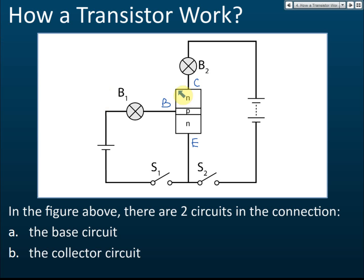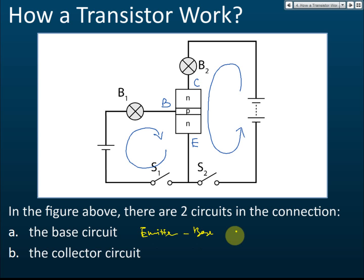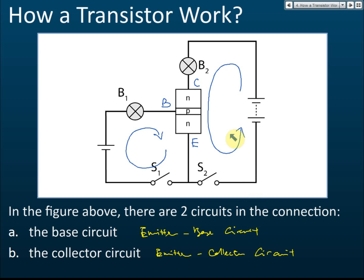The cell is connected in this way, so the currents move in this way. There are two circuits in a transistor: the one that connects from the emitter to the base is called the base circuit, or sometimes we call it the emitter-base circuit. The other one is called the collector circuit, or the emitter-collector circuit. The base circuit connects the emitter and the base, and the collector circuit connects the emitter and the collector.